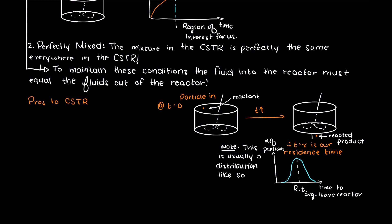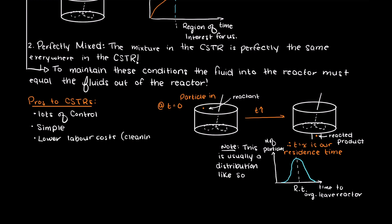Some advantages to CSTRs are that they give us a lot of control over the components within our reactor, such as the temperature. They are relatively simple and therefore less likely to break down. Additionally they have lower labor costs as cleaning the machine and running them are both easier compared to more complex reactors. Our control over things like temperature are due to the perfectly mixed assumption mentioned earlier. If we had a heating or cooling jacket over our CSTR, since the mixing is so good, the convection of heat quickly reaches a steady state, giving us excellent heat transfer.